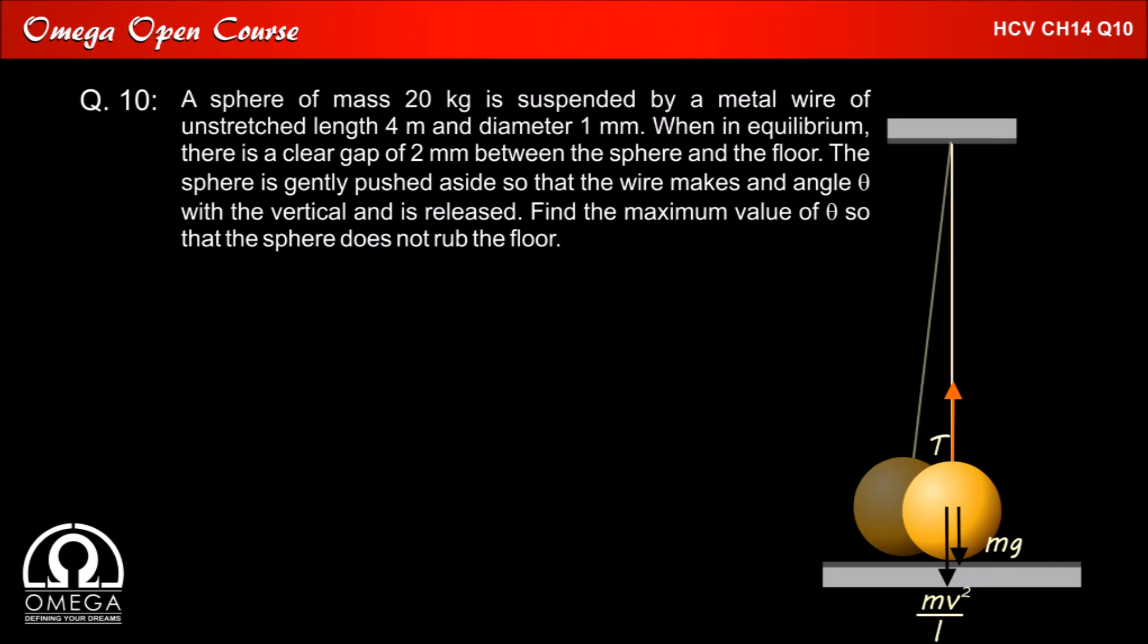Note that the radius here too shall be slightly more than the original length of the wire. But we can ignore the elongation experienced by the wire as they will be very small when compared with its actual length. Balancing the forces in vertical direction we get T is equal to mg plus mv square by L.